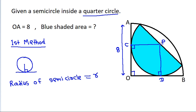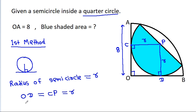Then PC = R, PD = R. OD is equal to CP, which is R. And OC is equal to DP, which is R. So OD is R.